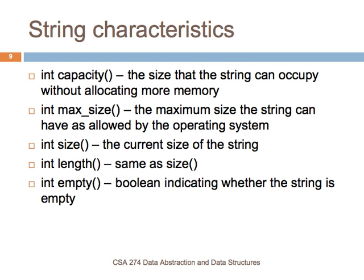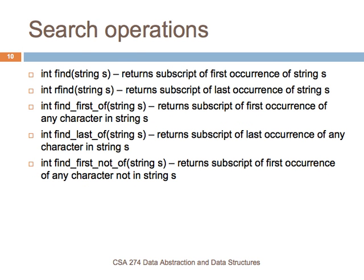There are search operations that allow you to search a string for the occurrence of some other string. The find and rfind give you the subscripts of where you can find certain substrings. The find operation tells you the first occurrence of a substring. rfind gives you the last occurrence of a substring. There's also find_first_of, which gives you the subscript of the first occurrence of any character in a string, and find_last_of, which gives you the subscript of the last occurrence of any character in a string.